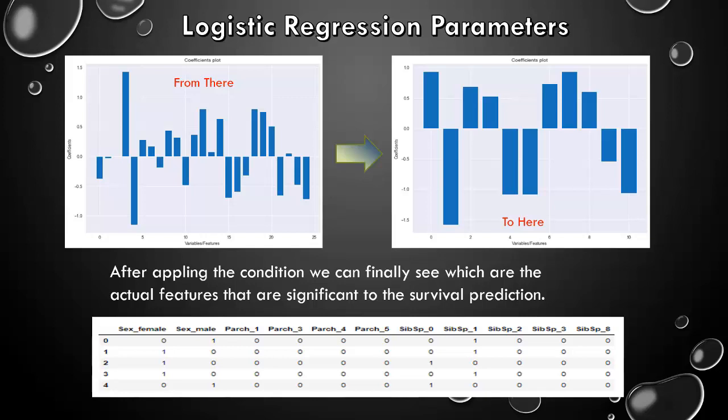What are the important features that we finally got? Sex female, Sex male, Parch1, Parch3, Parch4, Parch5, SibSp0, SibSp1, SibSp2, SibSp3, SibSp8. So, these are the final features that are significant to the survival prediction.